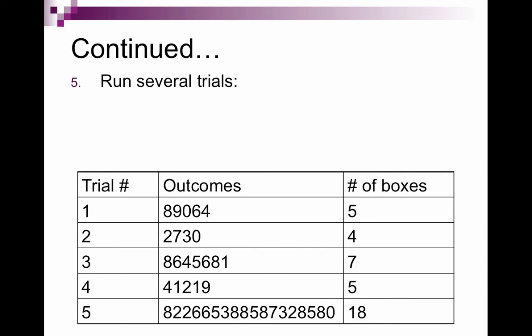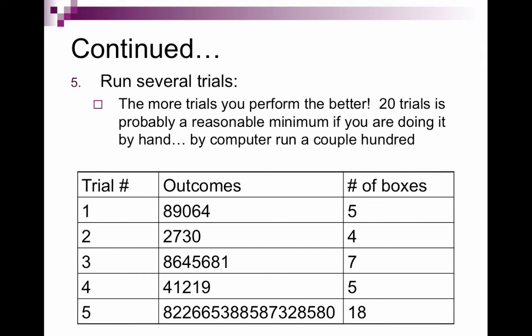Then we run several trials. So the more trials you perform, the better it's going to be, and the more accurate your prediction or your conclusion will be. Twenty trials is probably a reasonable minimum if you are doing it by hand. If you have a computer, you would end up running a few hundred. So here, I'm showing five trials. So these are all random numbers.